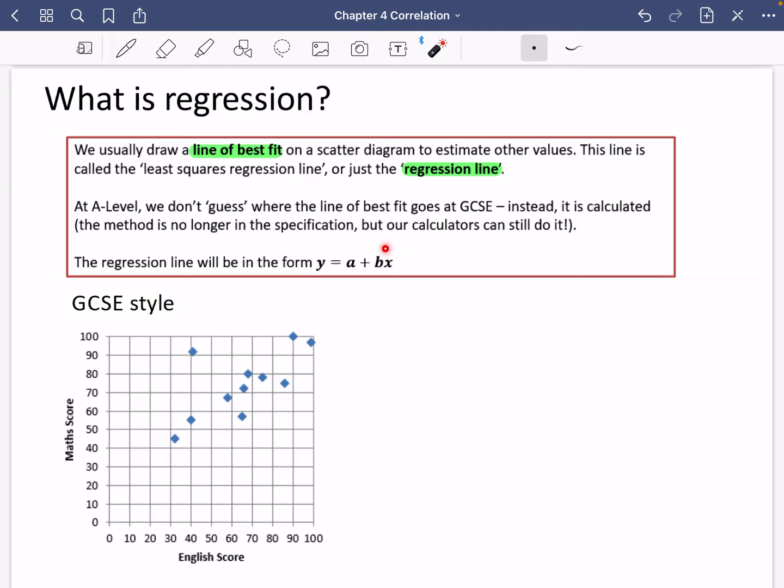The regression line will be in the form Y equals A plus BX. But really, Y equals A plus BX is just a straight line. It could have quite easily been Y equals MX plus C. It's the same thing, just switched around.